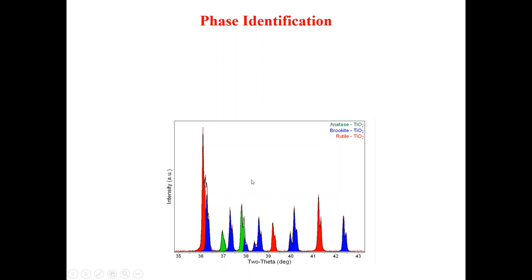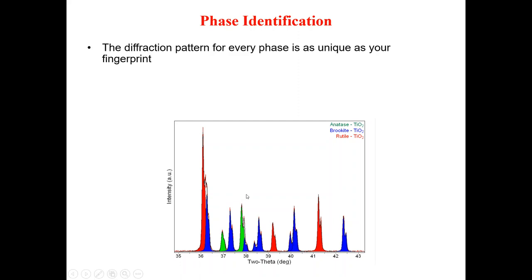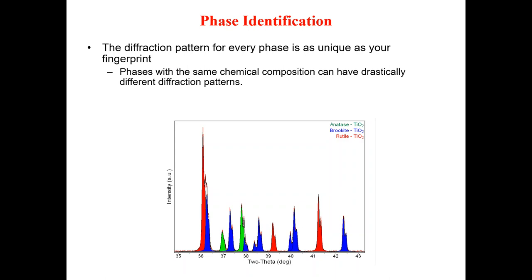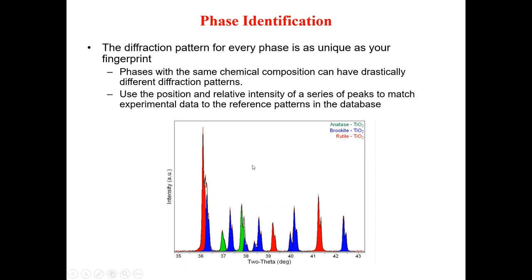Here is a typical XRD pattern of titanium dioxide showing three phases: anatase in green, brookite in blue, and rutile in red. All the peak positions for each phase can be clearly visualized in this XRD pattern. The diffraction pattern for every phase is as unique as a fingerprint — phases with the same chemical composition can have drastically different diffraction patterns. We use the positions and relative intensities of a series of peaks to match experimental data to reference patterns in a database.